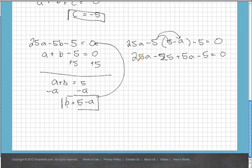Let's combine like terms. 25a plus 5a is 30a. Negative 25 minus 5 is negative 30.